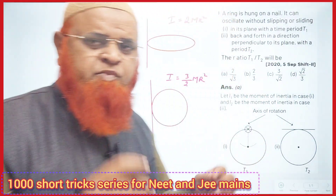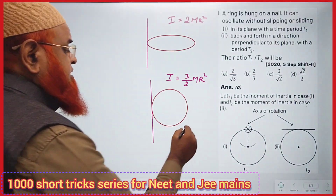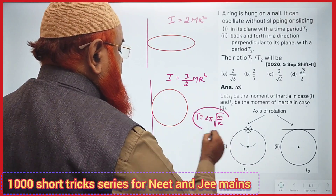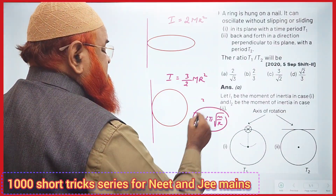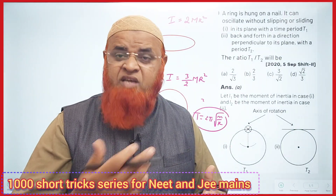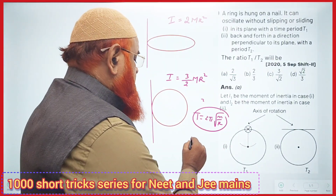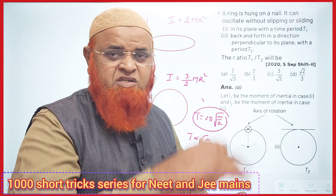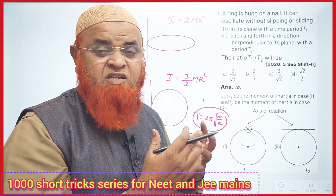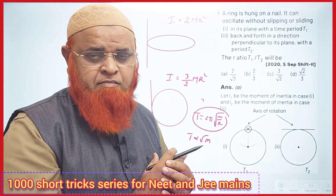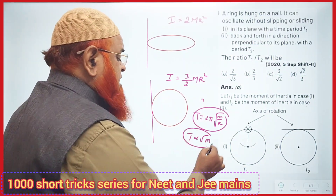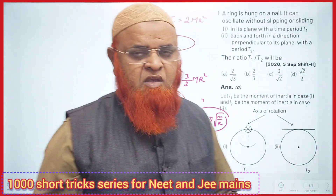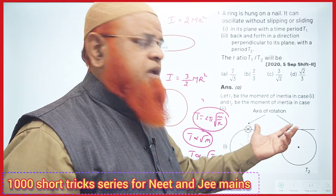I will discuss this in a super simple way. You all know time period equals 2π times root of m by k — in translatory motion, time period is directly proportional to root of mass. But since this is a circular body, it's a case of compound pendulum, so instead of mass we consider moment of inertia.